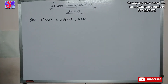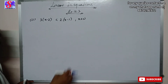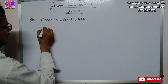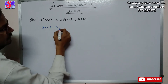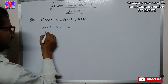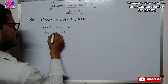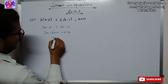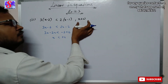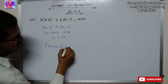Now let's move to the third part. Here we have 3(x minus 2) is less than 2x minus 1 where x is the element of whole number. Opening the bracket: 3x minus 6 is less than 2x minus 2. Transposing: 3x minus 2x is less than minus 2 plus 6, giving x is less than 4. As x is a whole number, the answer is 0, 1, 2 and 3.